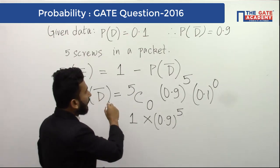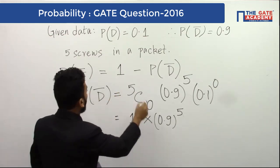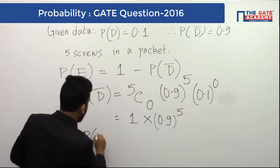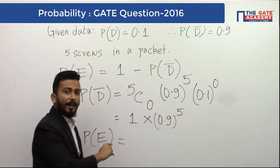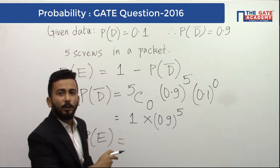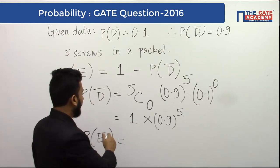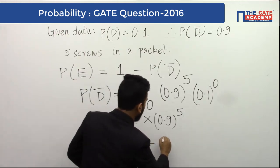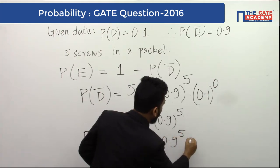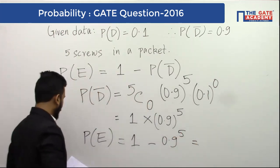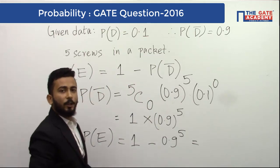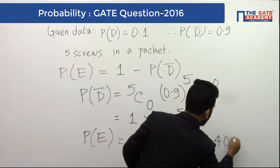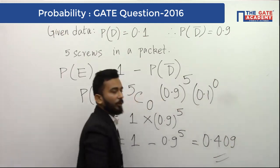Now I have got P(D'). I will put this value in this one. And so the probability of the event which was to find that the packet would get replaced is 1 minus 0.9 to the power 5. And this will come out to be 0.409.